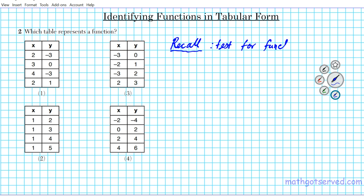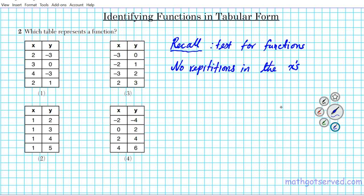Depending on whatever representation you're given, you can determine the right type of test. When given a table format, you have to remember that there are no repetitions in the x-values. Remember, the definition of a function is that it assigns every input to exactly one output. If you have repetitions in the x-values, the same input is being assigned to multiple outputs, which violates the definition of a function.